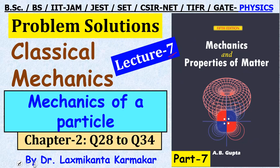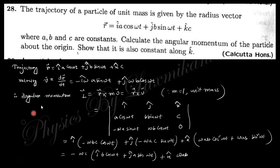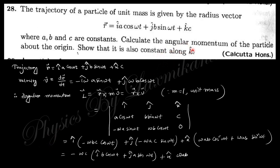Let's start today's discussion. Question 28 says: the trajectory of the particle is given, where a, b, c are constants. Calculate the angular momentum of the particle about the origin. The angular momentum is r cross p, and since this is a unit mass, m equals 1, so this is m cross v, and v is dr/dt. If you take the derivative you get this, and then the cross product gives this result.